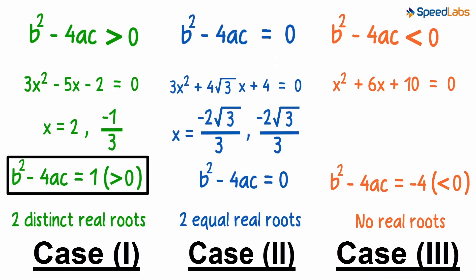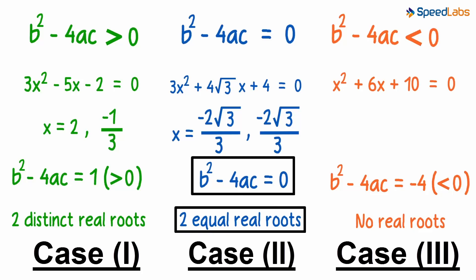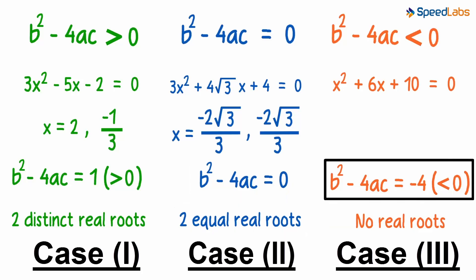If it's greater than zero, then the quadratic equation will have two distinct real roots. If it's equal to zero, then the quadratic equation will have equal real roots. And if it's less than zero, then the quadratic equation will have no real roots.